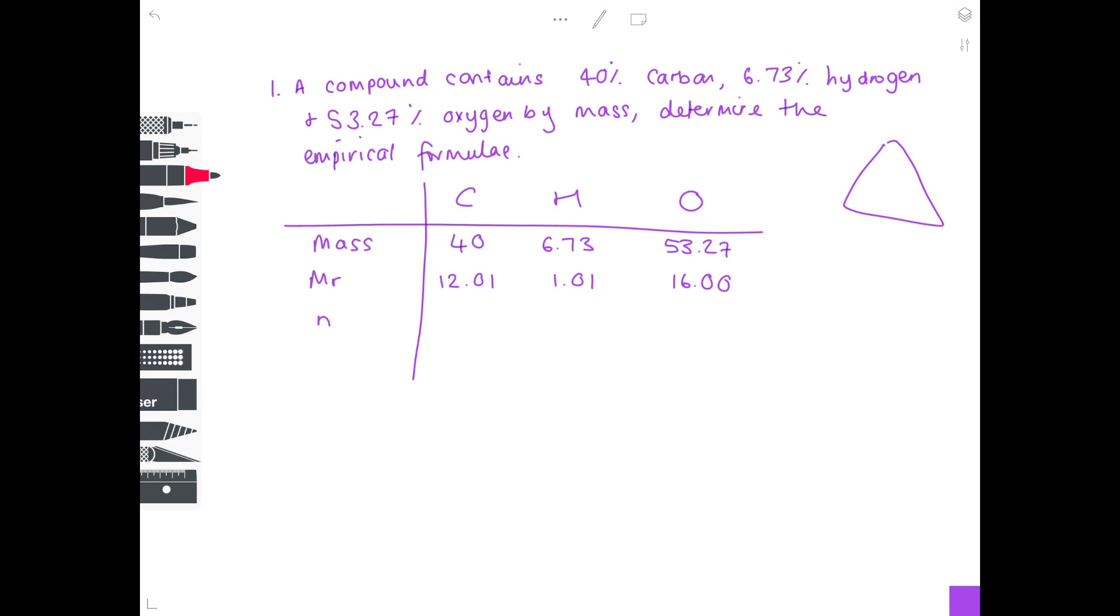Now using this formula triangle, which hopefully you'll be very familiar with, we have mass at the top, MR, and number of moles at the bottom. If we cover the one we're after, which is number of moles, you can see that that is given by mass divided by MR. So for carbon, divide 40 by 12.01 to get 3.33. To get the number of moles of hydrogen, do 6.73 divided by 1.01 to get 6.66. And lastly, for oxygen, do 53.27 divided by 16 to get 3.33.